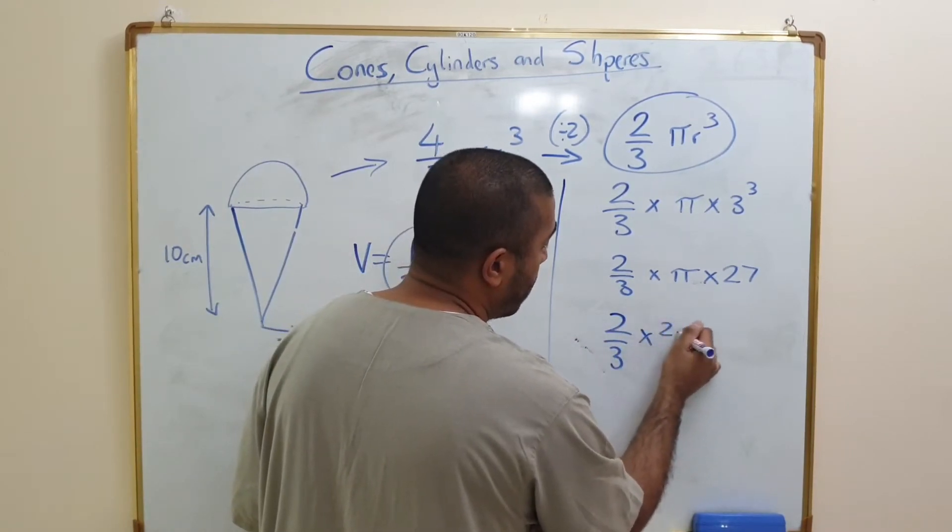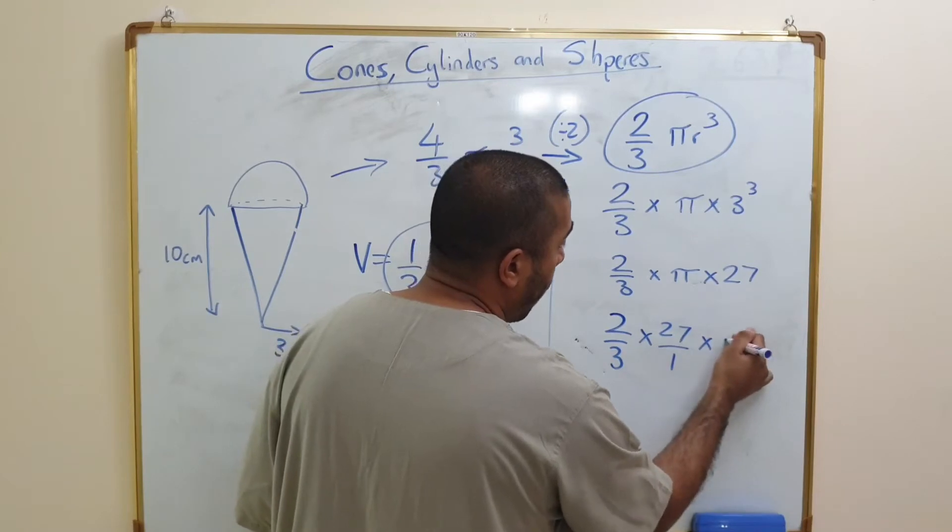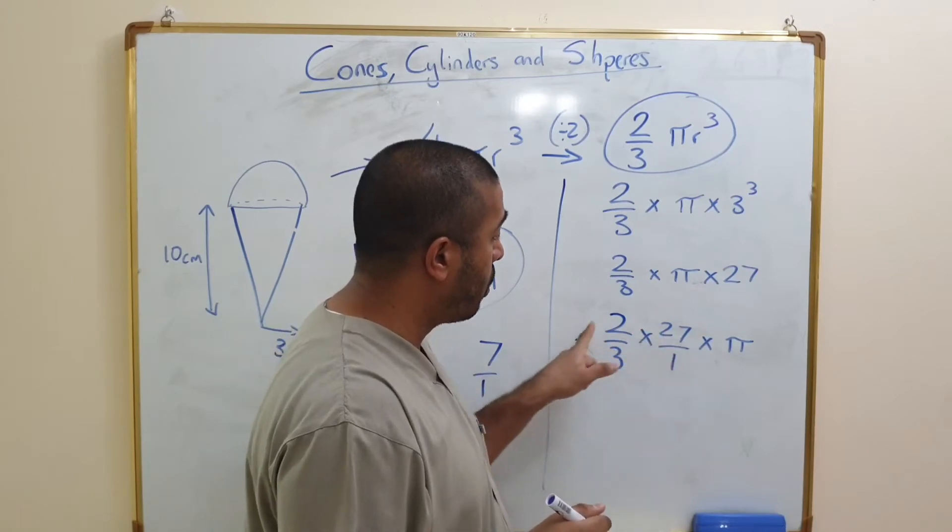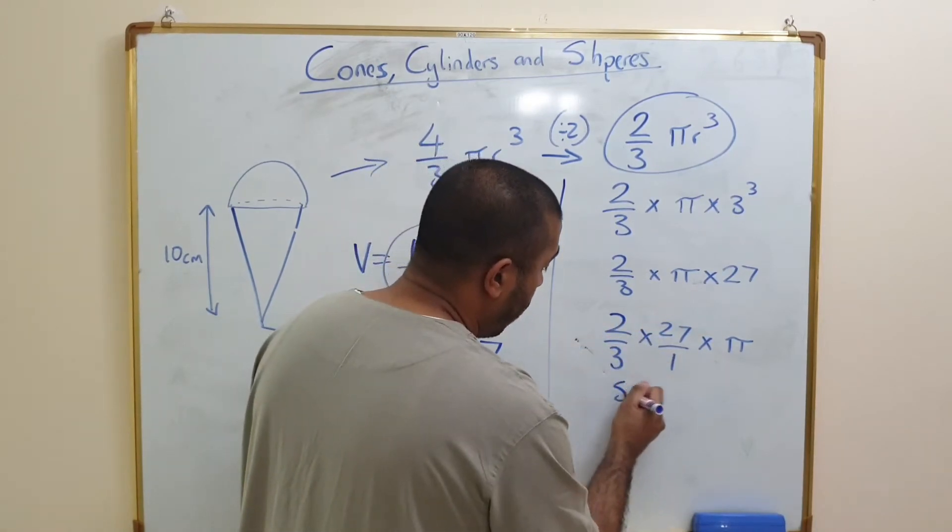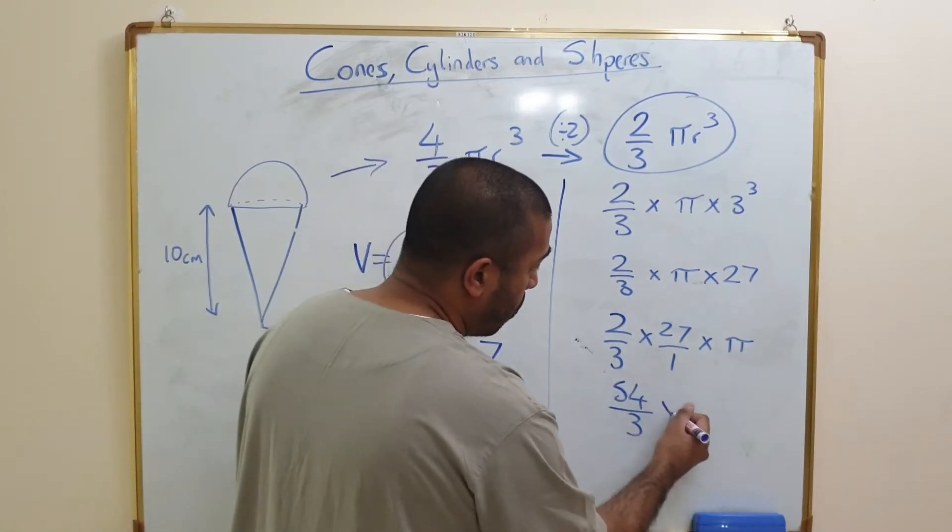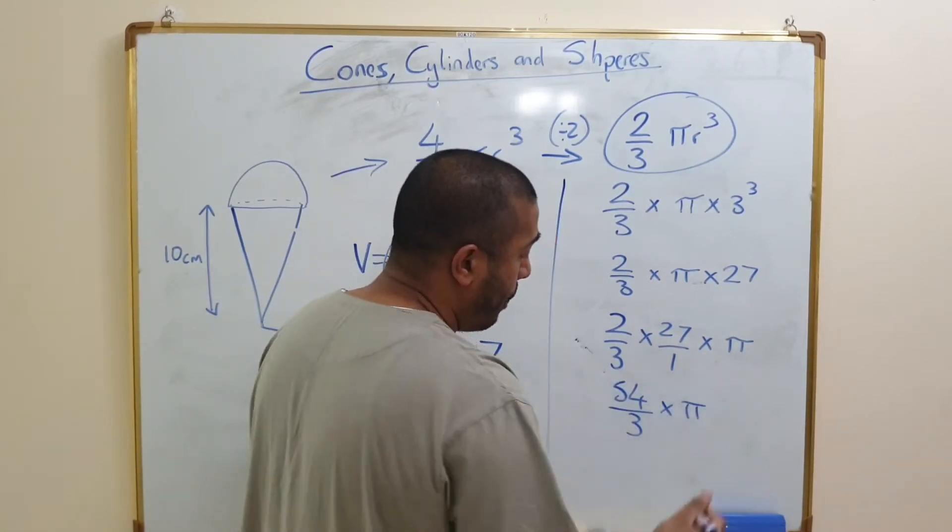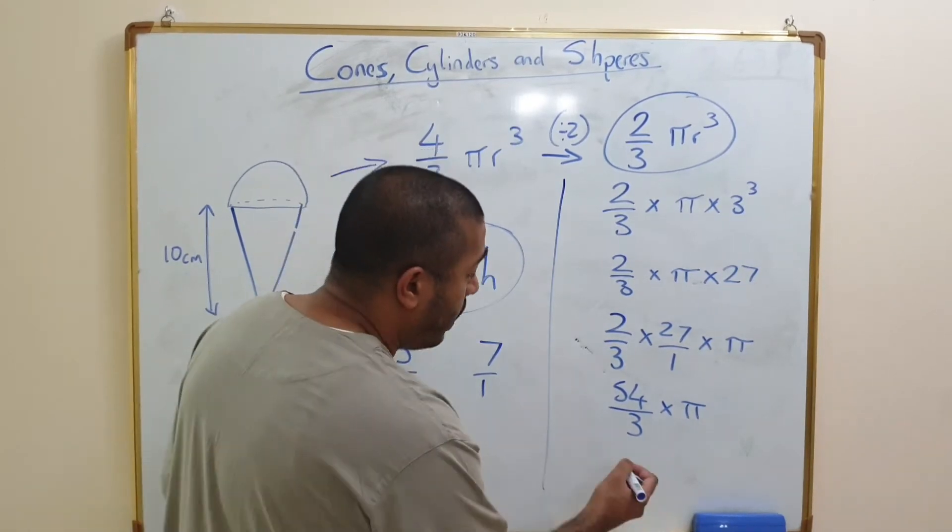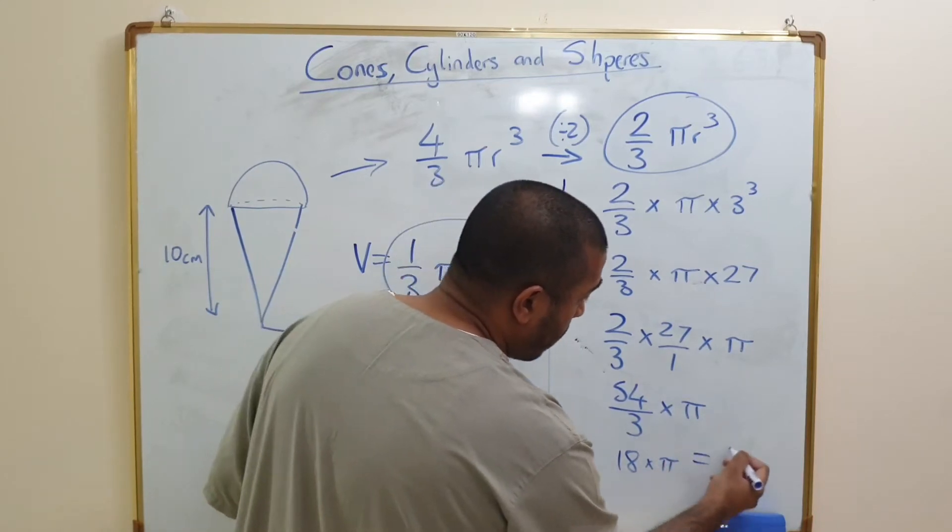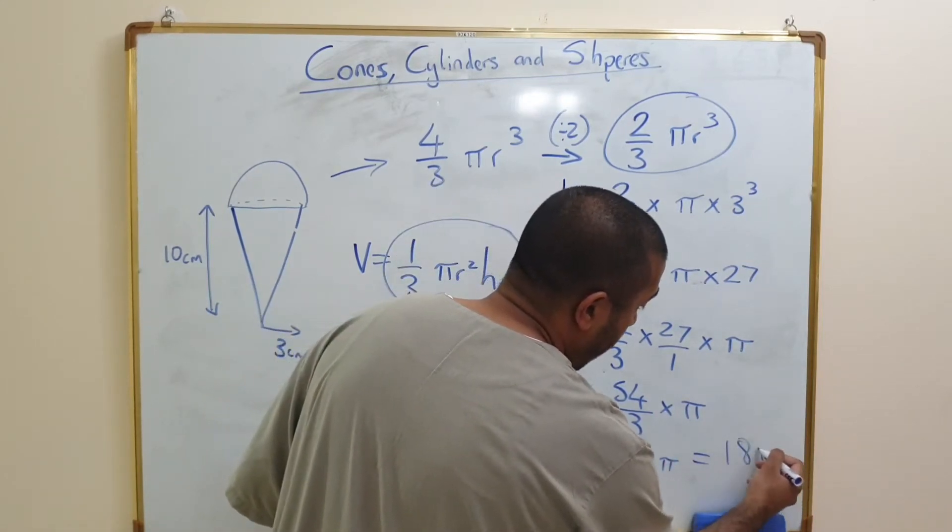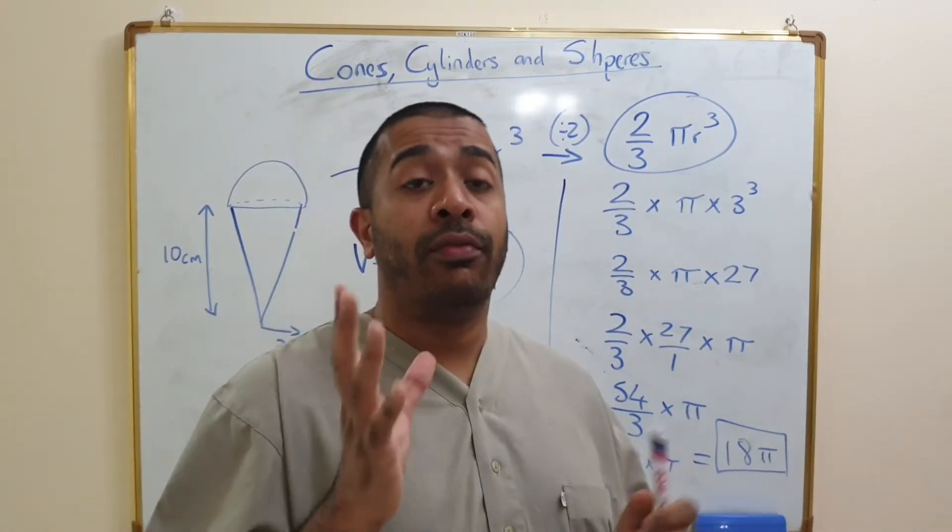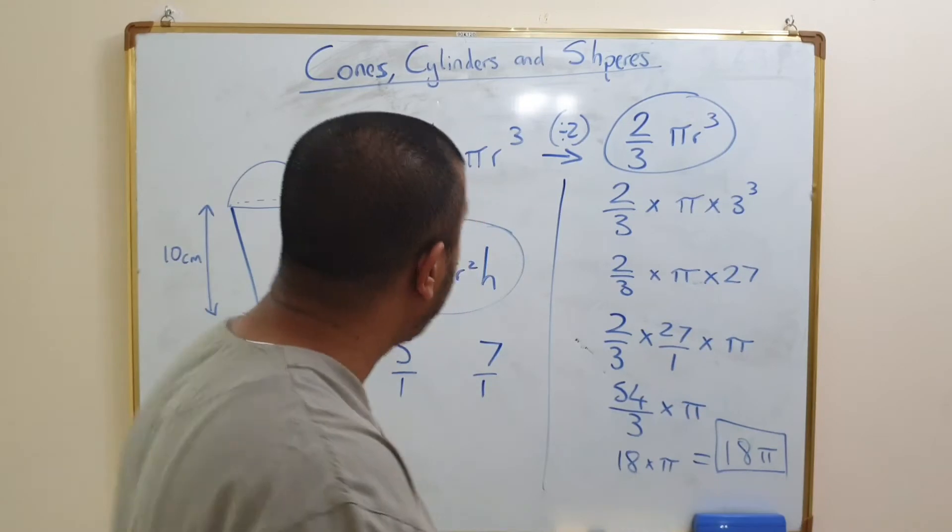So let's do that. 2/3 times by 27/1 multiplied by pi. Multiply that together. To multiply fractions you multiply straight across. 2 times by 27 is 54, 3 times by 1 is 3. So it's 54 over 3 multiplied by pi. If you simplify this you get 18 times by pi, which is the same as 18π. So the volume of the hemisphere is 18π. We've got that, so this here is 18π.